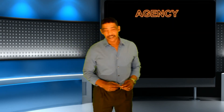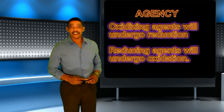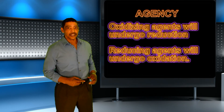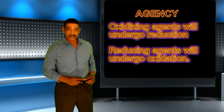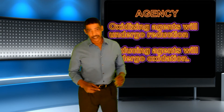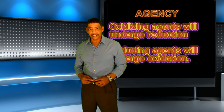Another important concept associated with oxidation-reduction reactions is the concept of agency, where an agent will facilitate another process. In an oxidation-reduction reaction, the species that undergoes oxidation actually facilitates reduction, and that species is called a reducing agent. The species that undergoes reduction facilitates oxidation, and that species is called an oxidizing agent.